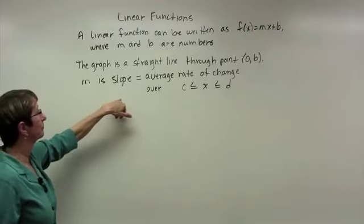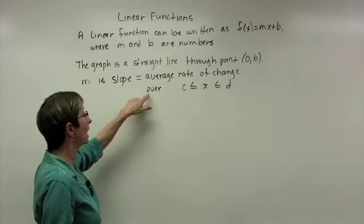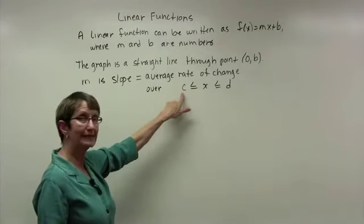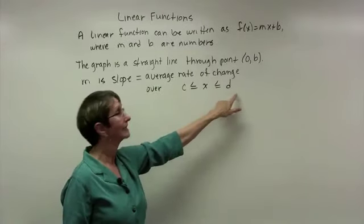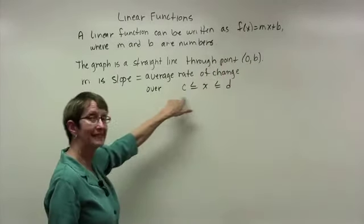m is slope. Slope is also equal to average rate of change over an interval, and we'll call this interval from x equal to c to x equal to d. So our letter x goes between c and d.